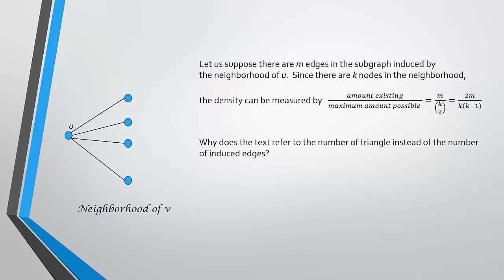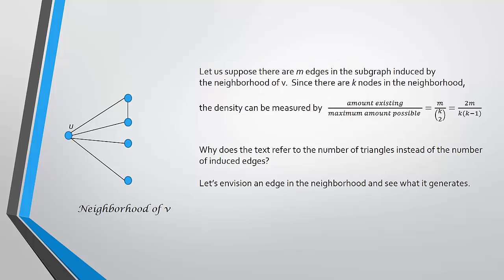This is similar to what is in the book, but the expression does not have m — instead it has the number of triangles. Why the number of triangles? We're counting the edges in the neighborhood, but if you include the node u, every time you have an edge in the neighborhood you induce a triangle. So it's really the same count: the number of triangles where u is one of the vertices is the same as counting the number of edges in the neighborhood.